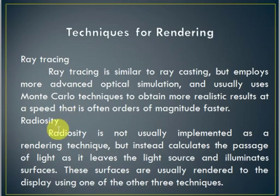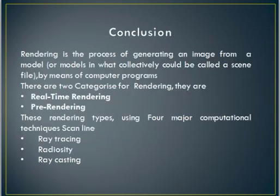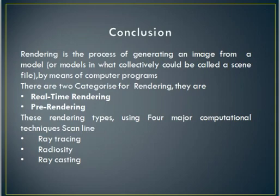To conclude: rendering is the process of generating an image from a model by means of a computer program. We have two categories of rendering — real-time rendering and pre-rendering. Using these rendering types we have four major techniques: scanline, ray tracing, radiosity, and ray casting. Thank you.